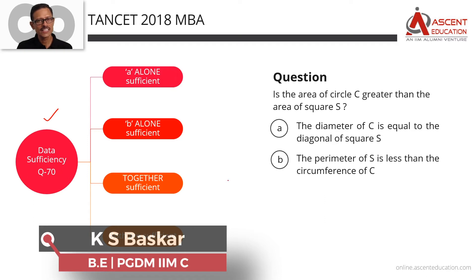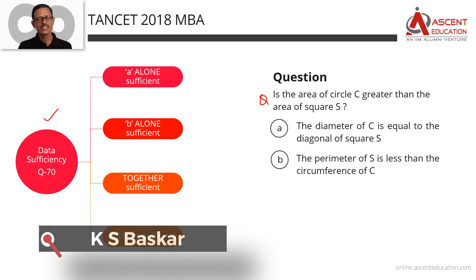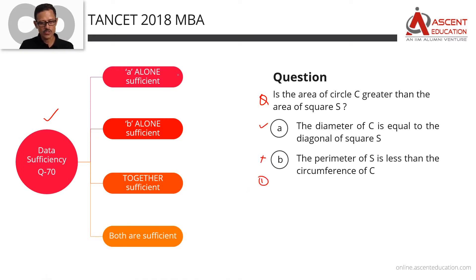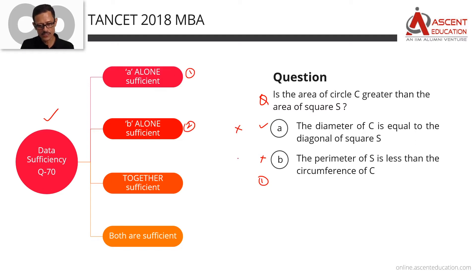In data sufficiency questions, there is a question followed by two statements. What we want to check is whether the statements are sufficient to answer the question. If A alone is sufficient and B is not, the answer option is 1. If B alone is sufficient and A is not, the answer option is 2.